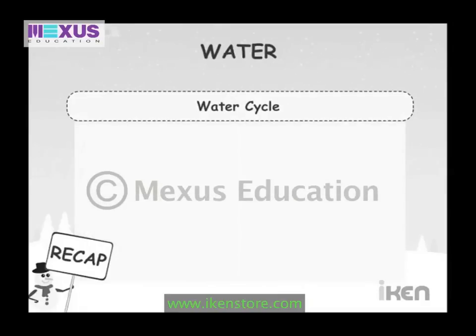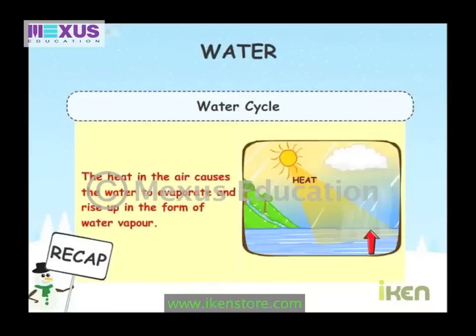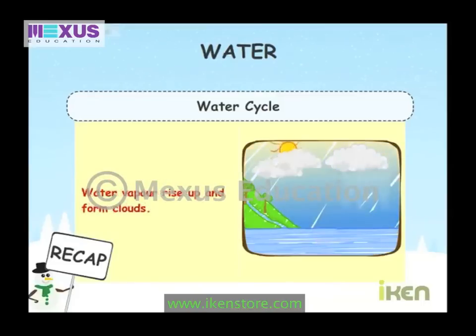Water cycle: The heat in the air causes the water to evaporate and rise up in the form of water vapour. Water vapour rises up and forms clouds.